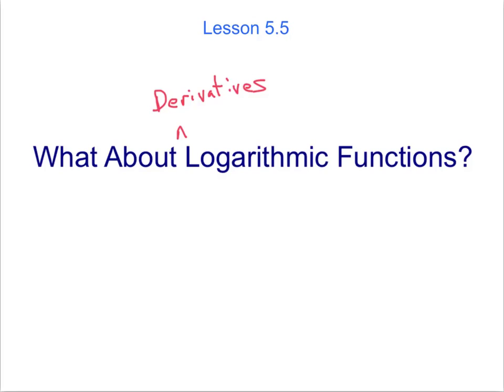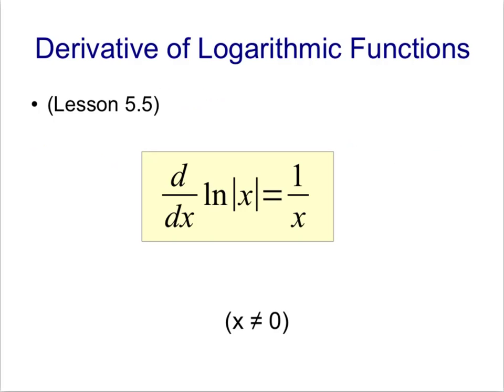First, let's examine the formula for finding the derivative of the natural log of absolute value of x. This formula, straight out of your book, tells us that if we want to take the derivative of the natural log of absolute value of x, the derivative is 1 over x.